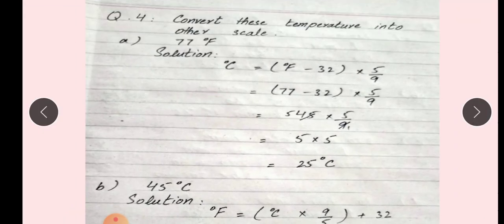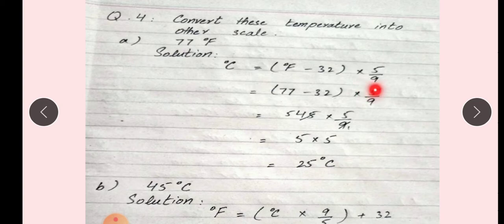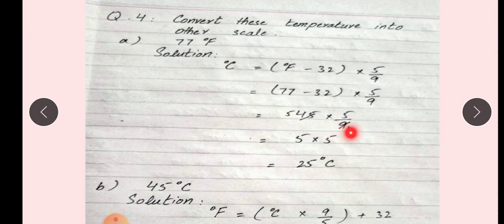Question number 4. Convert these temperatures into the other scale. A: 77°F. F means Fahrenheit and C means Celsius. Formula है: C is equal to (F minus 32) multiplied by 5 over 9. Values put करेंगे: (77 minus 32) multiply by 5/9. 77 में से 32 subtract किया तो 45 multiply by 5/9. Cutting करेंगे: 5 multiply by 5 is equal to 25 degree Celsius.